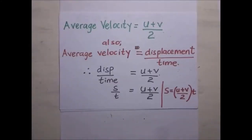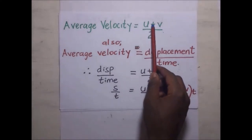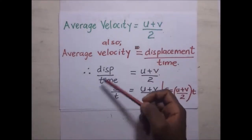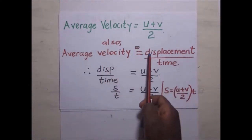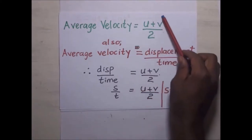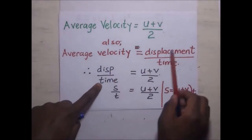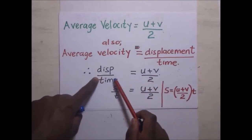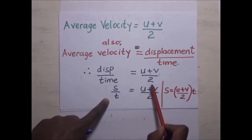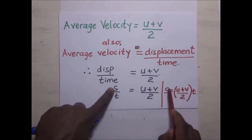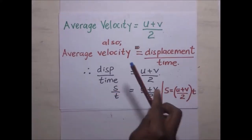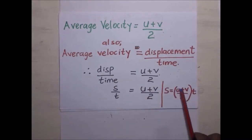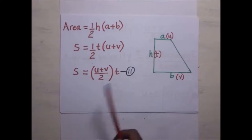Alternatively, the second equation can be derived using the definition of average velocity. Average velocity = (u + v)/2, and also average velocity = s/t. Equating these: s/t = (u + v)/2. Making s the subject gives s = (u + v)/2 × t — the same second equation of motion.